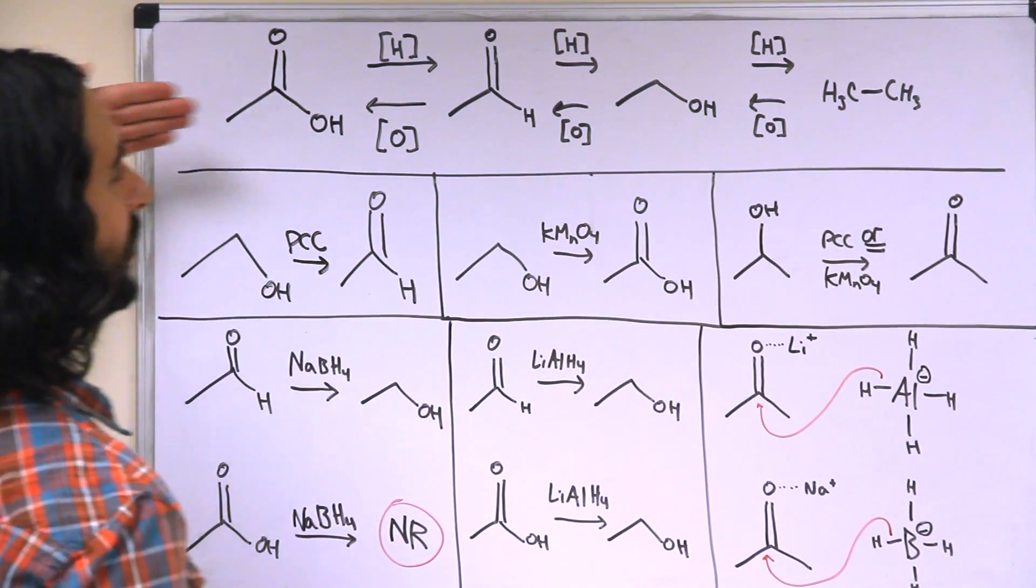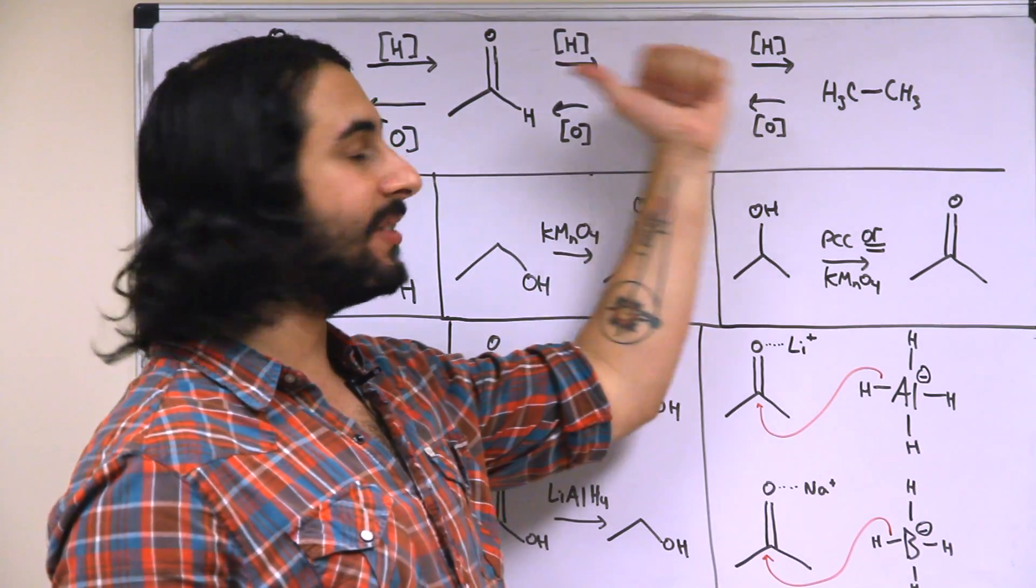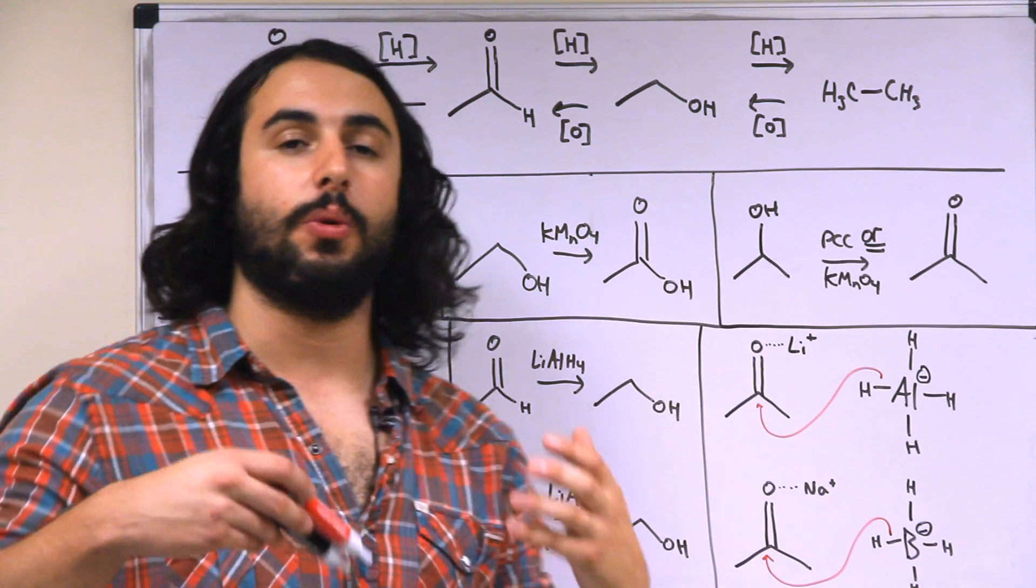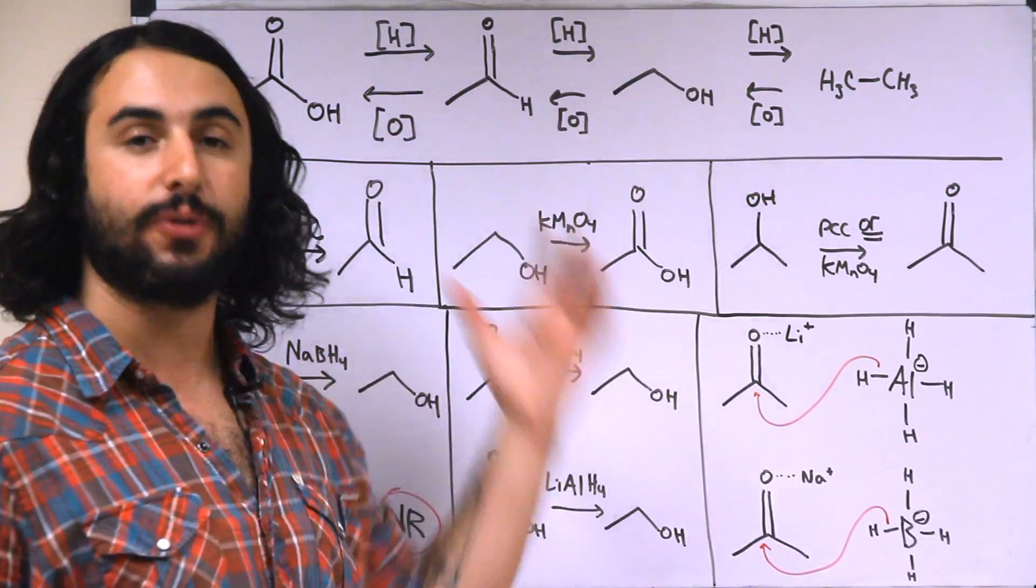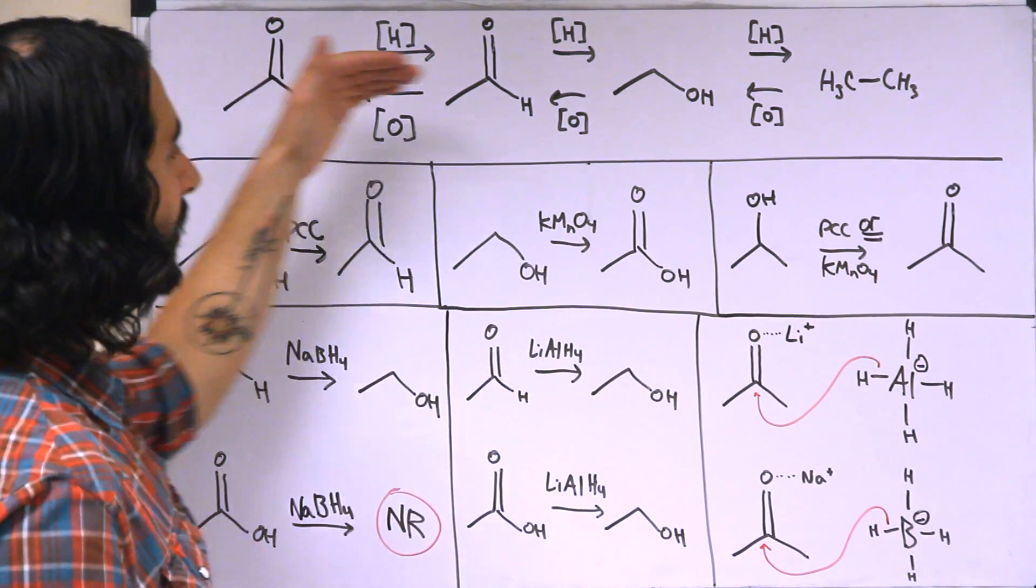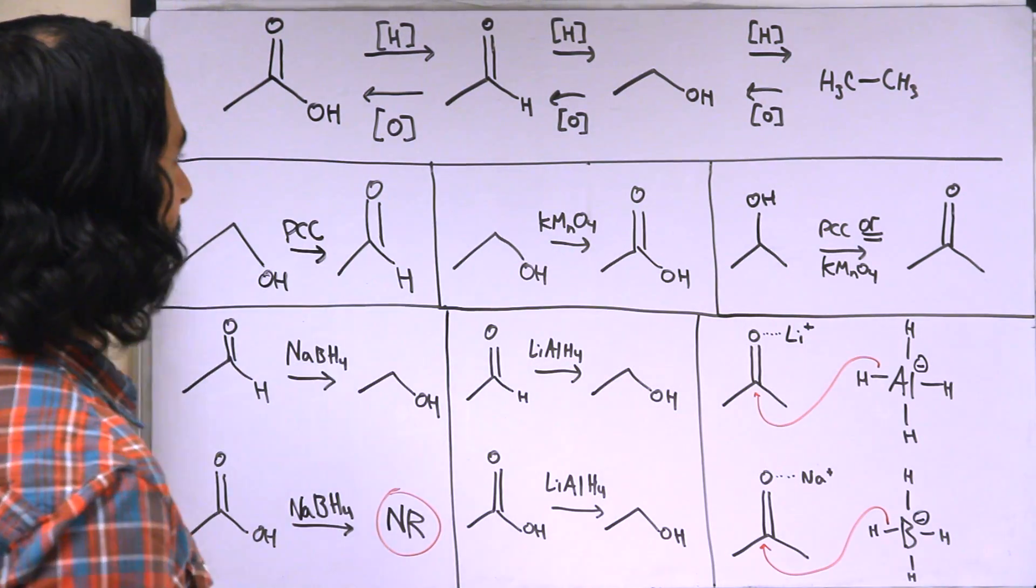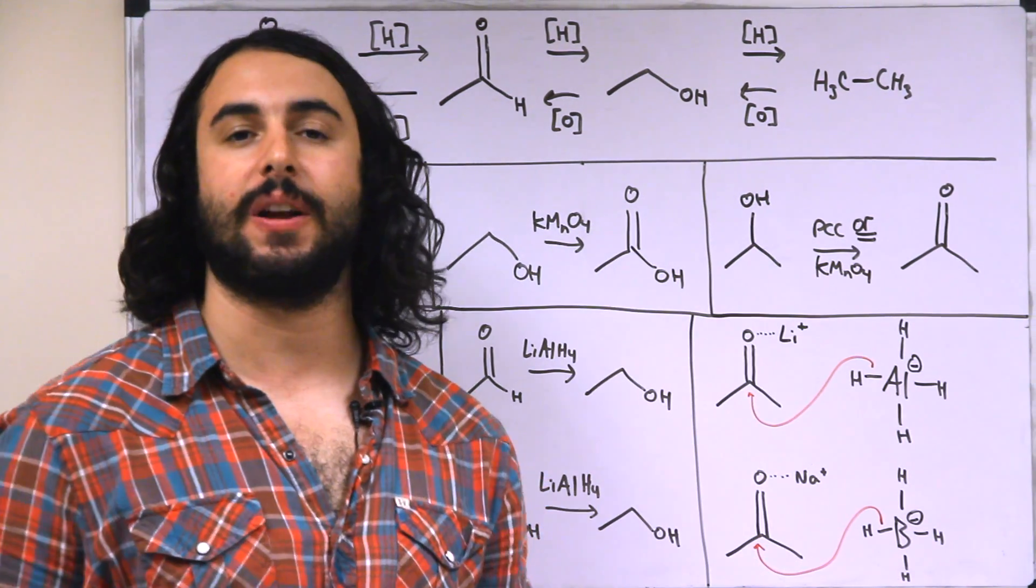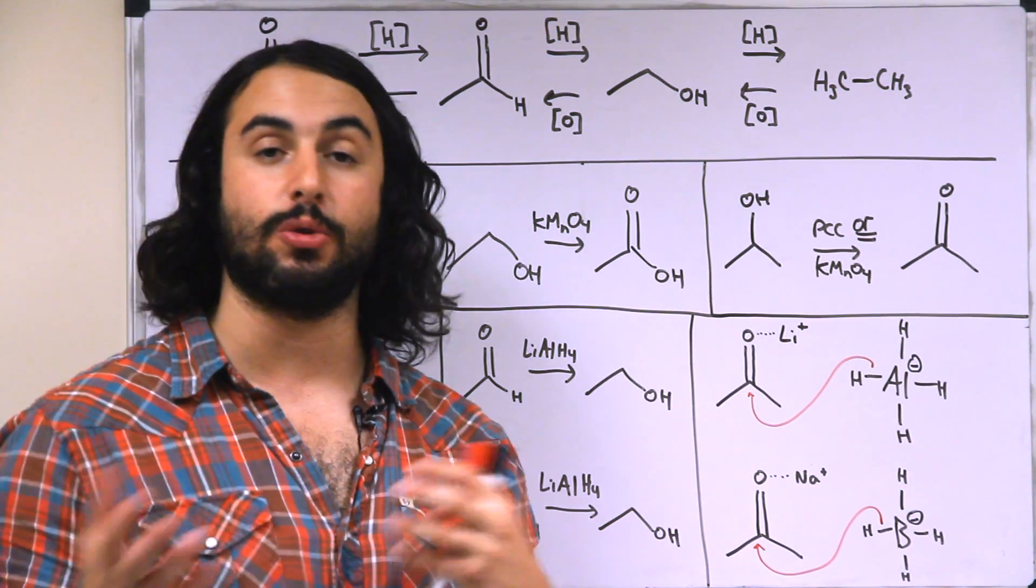So in this direction, this is reduction. In this direction, this is oxidation. So there are different compounds that will induce different transformations. There are reducing agents that will reduce any of these compounds in this direction and there are oxidizing agents that will oxidize compounds into this direction. So let's take a look at a few of them and see how they differ in strength and why we might use one over another.